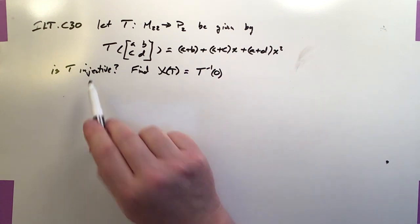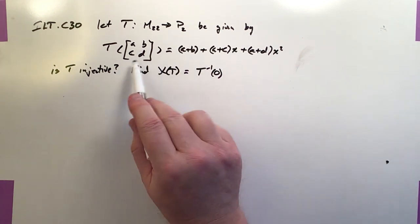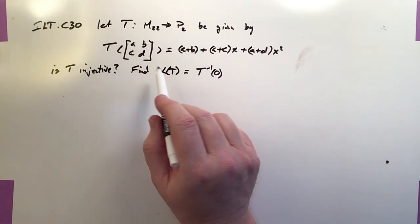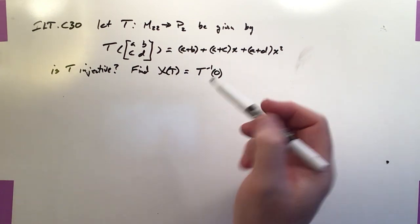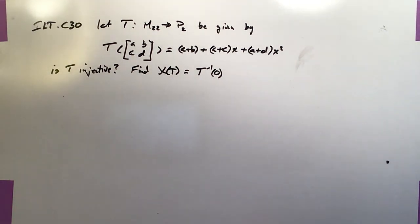Is it 1-to-1? If it is 1-to-1, then it's injective. But if it's not 1-to-1, then it will prove to be non-injective. And we can answer that question by finding the kernel, and then I'll show you a way that we can answer it even quicker.